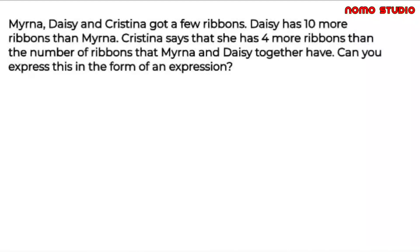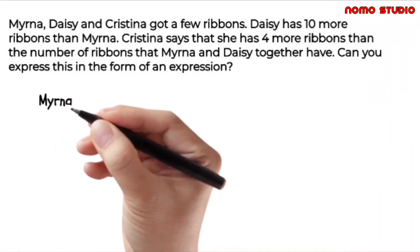Understand the wording. It says that Daisy has 10 more ribbons than Myrna. So in this case, we don't know yet Myrna's total number of ribbons. We let X for the total number of ribbons that Myrna has.